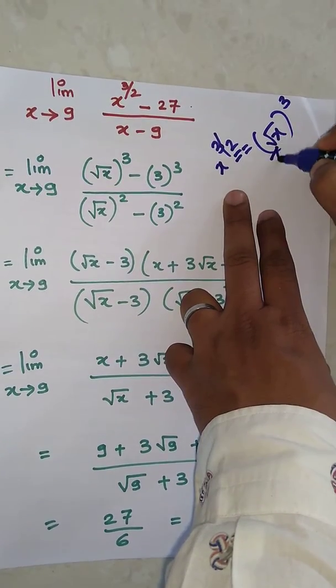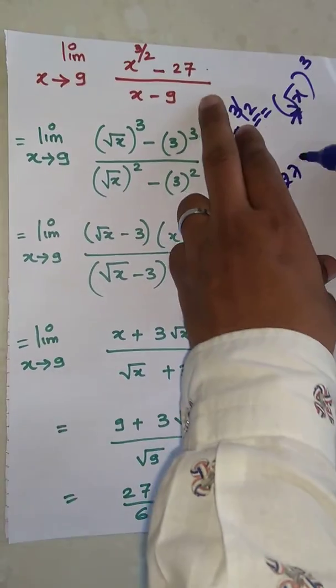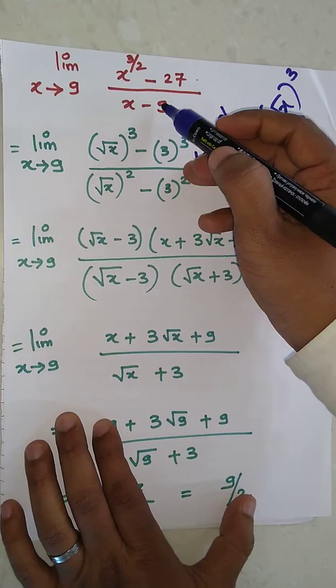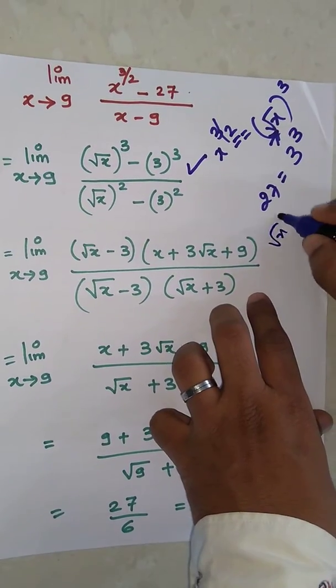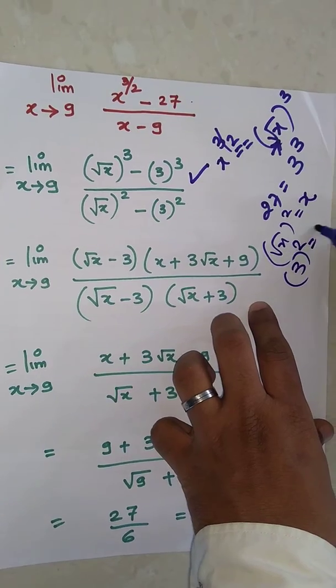This 2 is the root and 3 as is. 27 equals 3 cube so we're writing in this form. Denominator x minus 9, so root x squared is x and 3 squared is 9, so we're writing in that form.